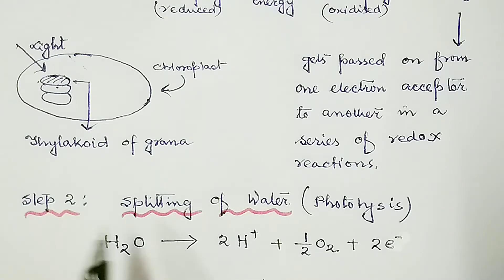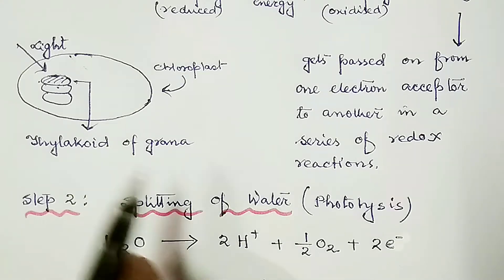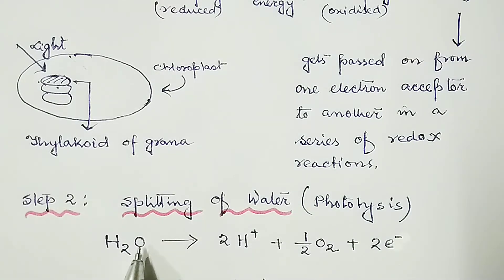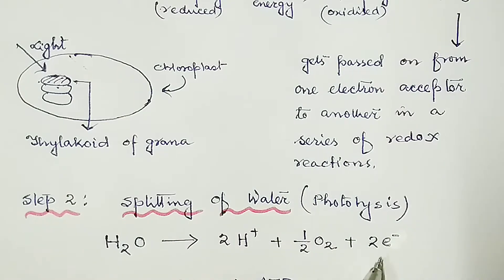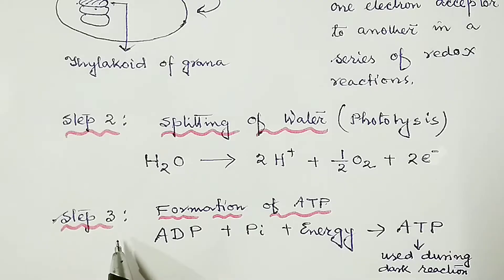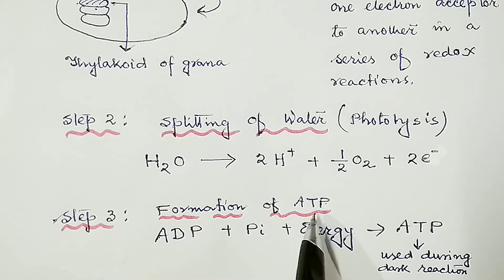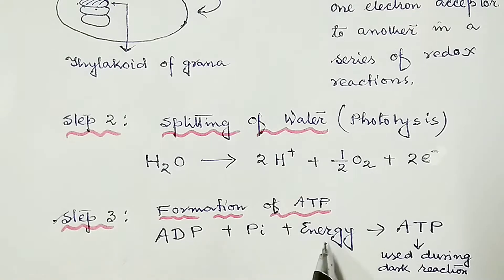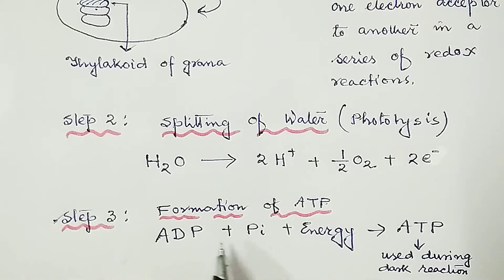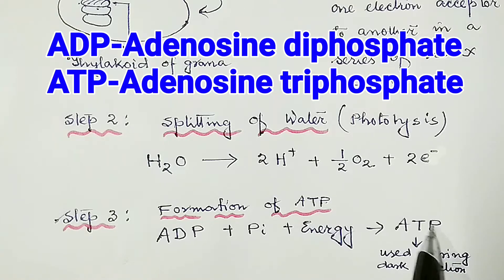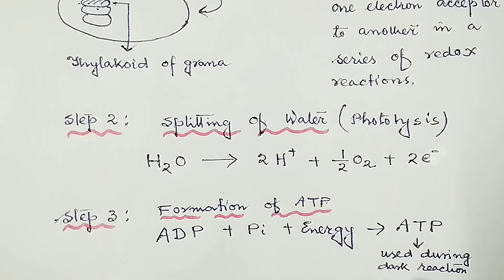The second step of light reaction is splitting of water, which is also known as photolysis. As an electron is lost by the chlorophyll, to replace this electron, water will split in the form of highly active hydrogen ions, oxygen, and it will release two electrons. This is the oxygen which is released during the process of photosynthesis. The third step of light reaction is the formation of ATP. The hydrogen ions formed during splitting of water will flow and in the process release energy. Using this energy, inorganic phosphate is added to ADP (adenosine diphosphate) to form ATP (adenosine triphosphate). These ATP molecules will be used during the dark reaction as a source of energy.